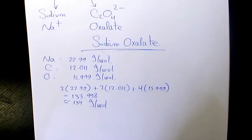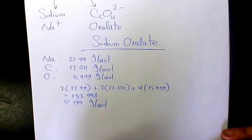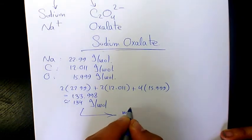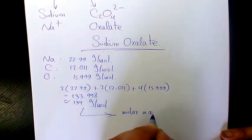Or milligram per millimole, but grams per mole is more common. That's the molar mass of sodium oxalate.